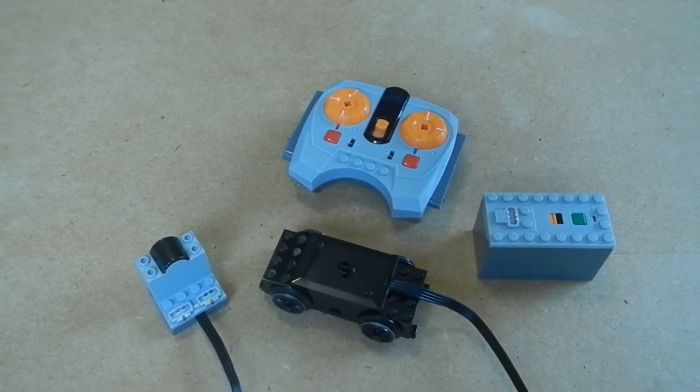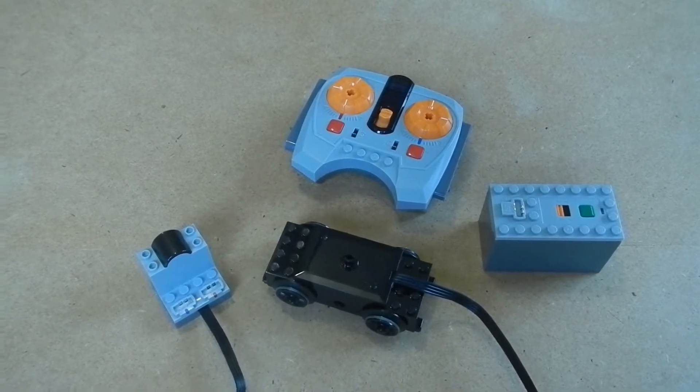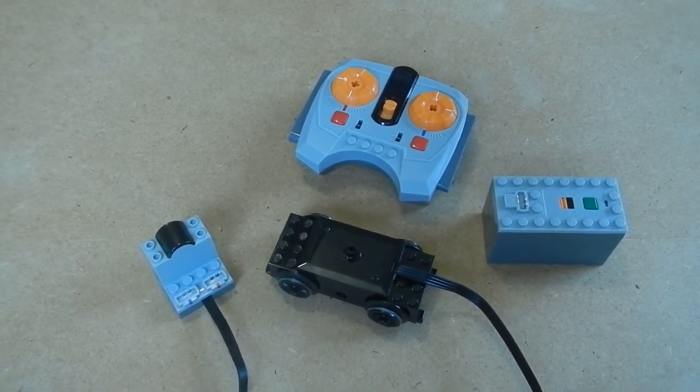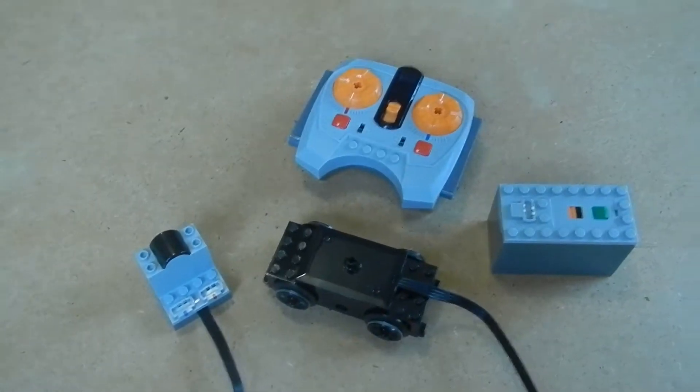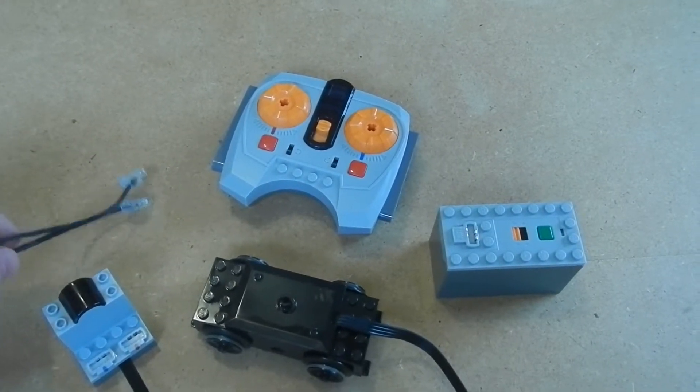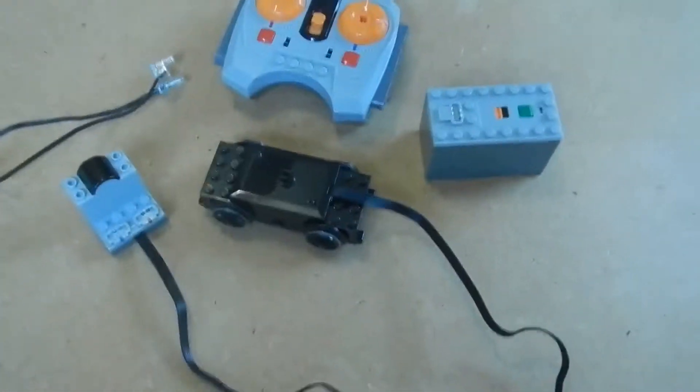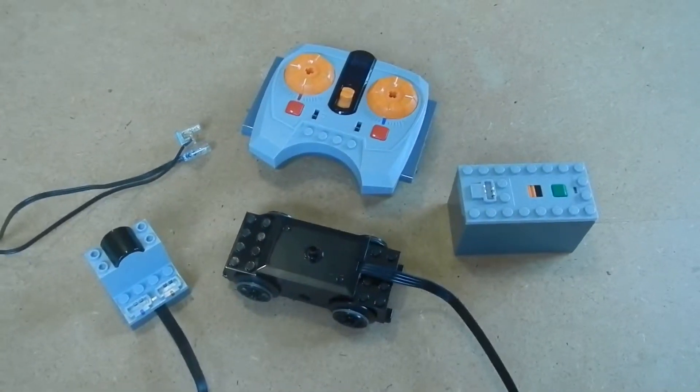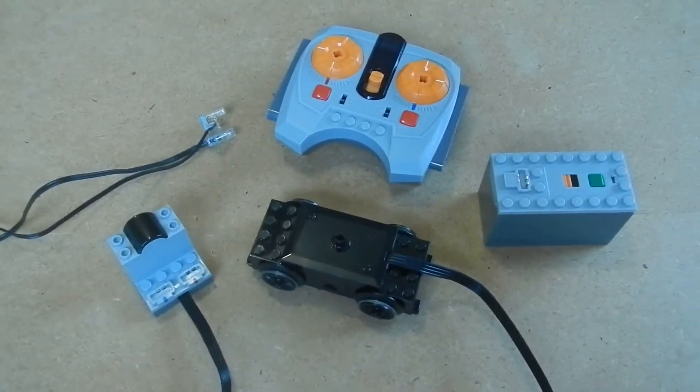All of the remote control power function parts in this Steam Train can be found in most Lego train sets, except for the LED lights. Now all of these parts here can be bought separately on Lego.com.